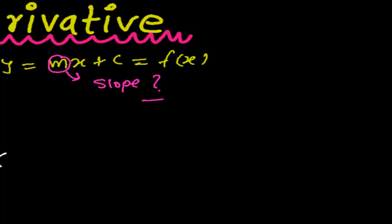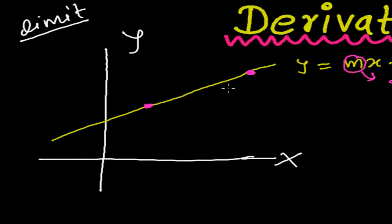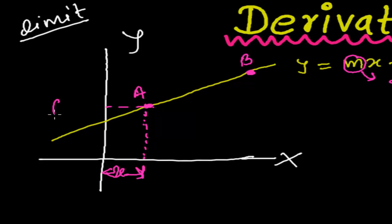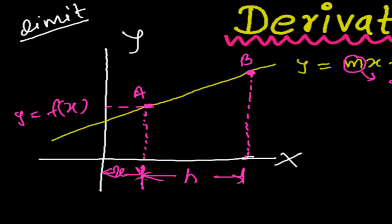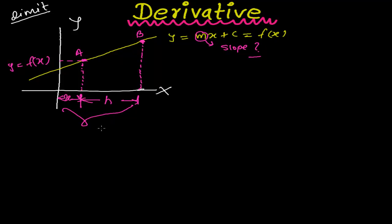To find the value of the slope of a line, as we do in Coordinate Geometry, we need to have two points. I am taking this as point a and this as point b. Let me suppose the x-coordinate of point a is x. The corresponding y-coordinate will be f of x — if you just plug the value of x into this function f(x), you will get the value of the y-coordinate. Now, I am supposing that point b is about h distance away from point a, so the total x-coordinate of point b will be x plus h. Therefore, the corresponding y-coordinate will be f of x plus h.